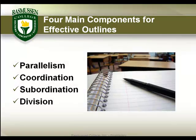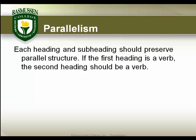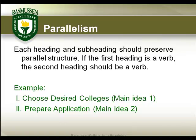To create an easy-to-follow, well-formatted outline, you should follow four suggestions as you begin to write. Each addresses how subjects are grouped or how words are put together to form phrases, and serves to provide consistency throughout the outline. The first component is known as parallelism. Each heading and subheading should preserve a parallel structure. If the first heading is a verb, the second heading should also be a verb. Like in this example, 'choose' and 'prepare' are both verbs. The present tense of the verb is usually used and is the preferred form for the outline.